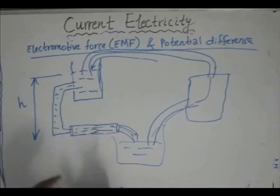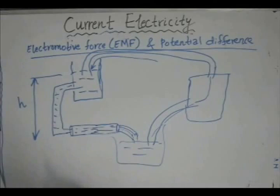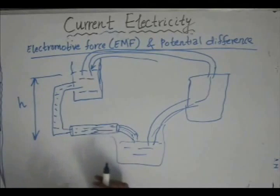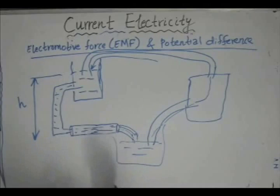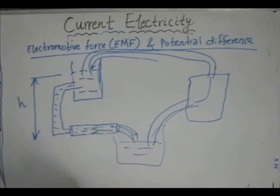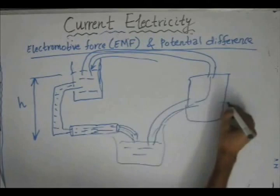As long as the pressure difference between the two ends of the tube remains the same, the same amount of water will flow — in other words, there is a steady flow of water current. So this motor is our external agency.